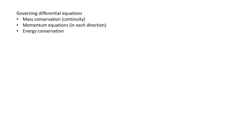Last time we talked about how boundary layers behave from a conceptual standpoint. Today we're going to get into the underlying math. This isn't really a fluids class, but we're going to start by deriving — or at least showing most of the steps — to derive the governing partial differential equations that describe a flowing fluid. These include conservation of mass (continuity), momentum equations in every coordinate direction, and energy. We'll derive them, then simplify them for the special case of a boundary layer.